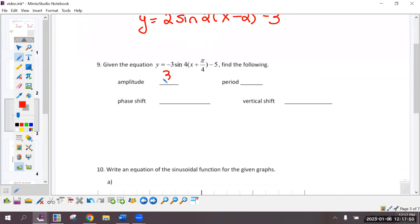Amplitude is 3. Amplitude is always positive. So this negative is a reflection over the x-axis. That is not part of the amplitude. The phase shift is to the left, pi over 4. Vertical shift is down 5. And the period is 2 pi over B, which reduces to pi over 2.